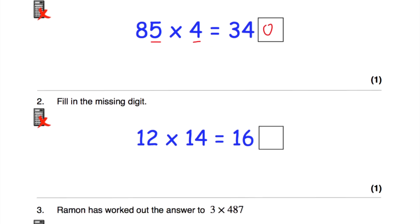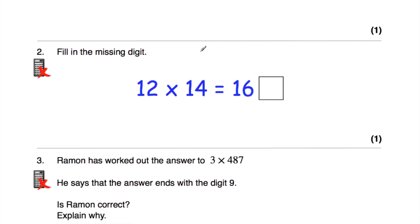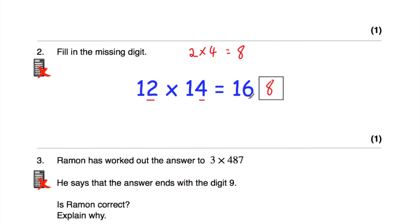Question number two: we've got 12 times 14 is equal to 160 something. To find the end digit, we multiply the two end digits. So we do 2 times 4, and 2 times 4 is equal to 8. So the answer is 168.